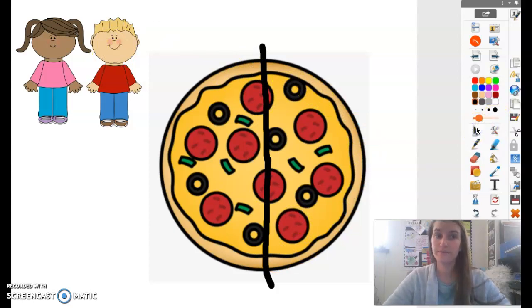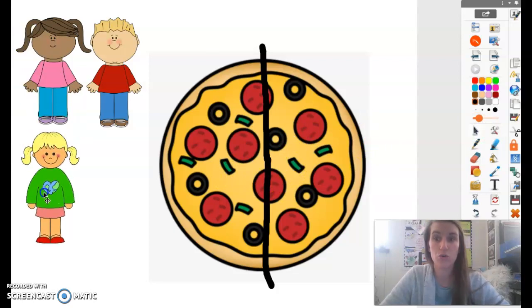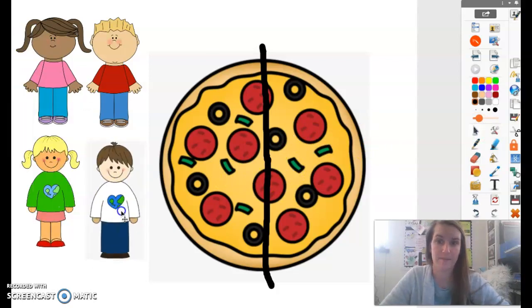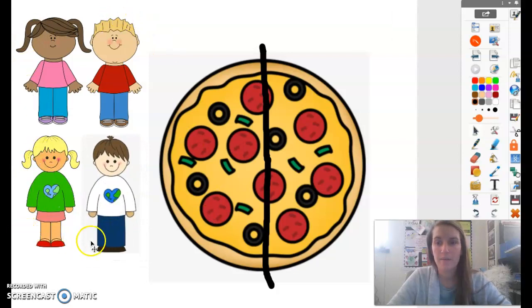Well, what if they cut it in halves like this, but then two more friends came? Now how many children are there? There are four children. So now how could they cut this pizza so that all four of the children can have an equal piece? Can you draw on your circle to show how they could partition this into four equal parts?